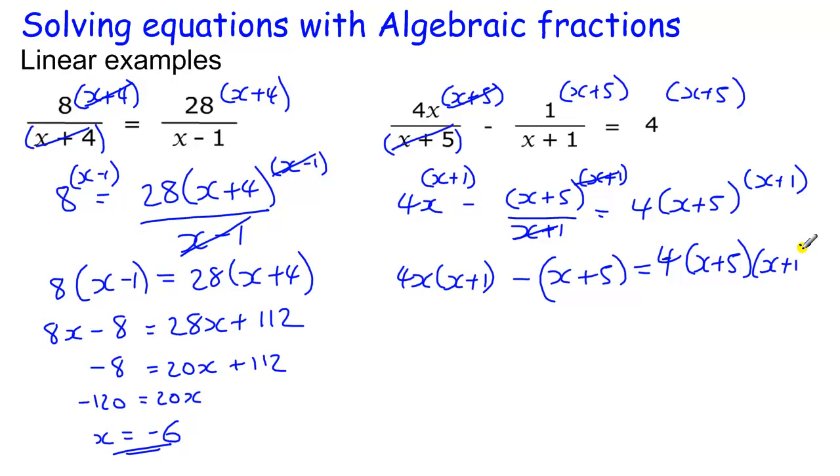minus x plus 5 equals 4 lots of x plus 5, x plus 1. Now this looks like it's going to be a quadratic, because you've got x's times x's, but the x squared terms should cancel.